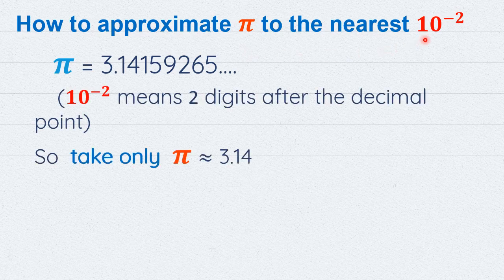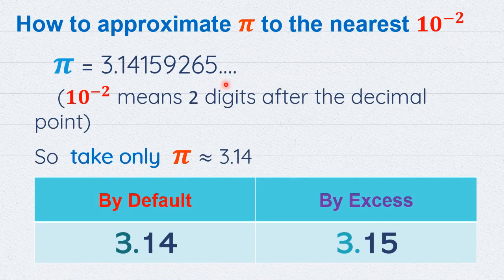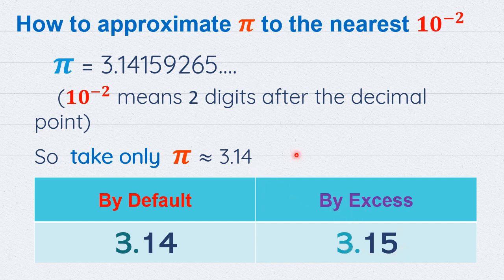How to approximate pi: since pi and any irrational number has infinitely many digits, we approximate it to the nearest 10^-2 or 10^-3. Ten to the power minus 2 means two digits after the decimal point; 10^-3 means three digits. For pi, taking two digits gives 3.14 — by default we keep it as 3.14, or by excess we add one to the last digit to get 3.15.